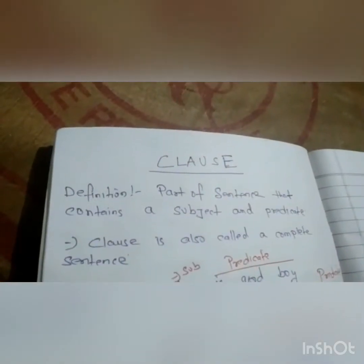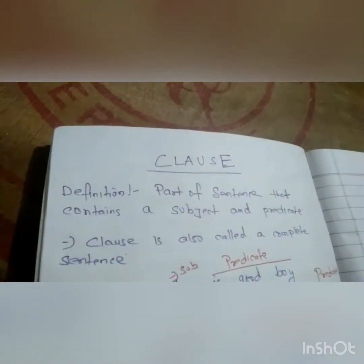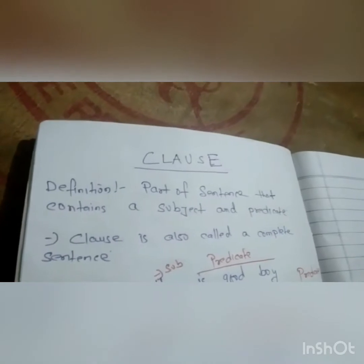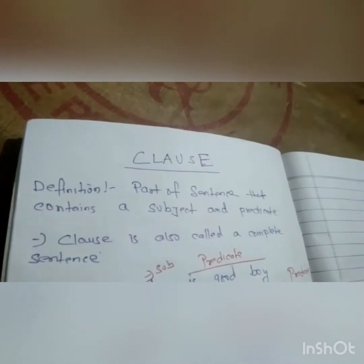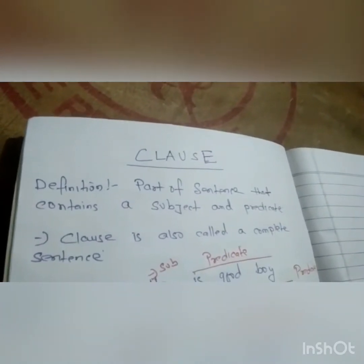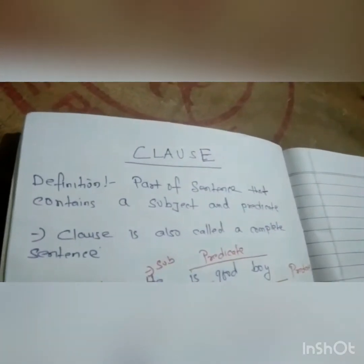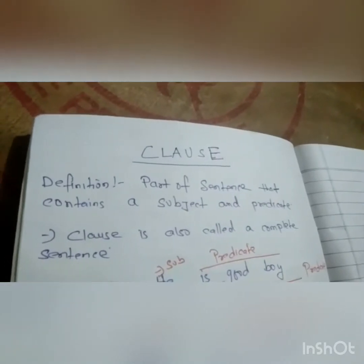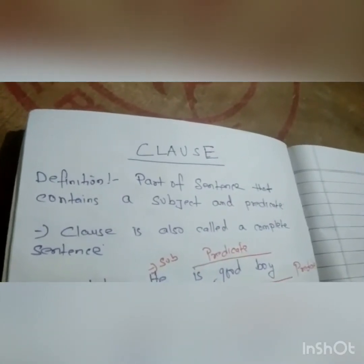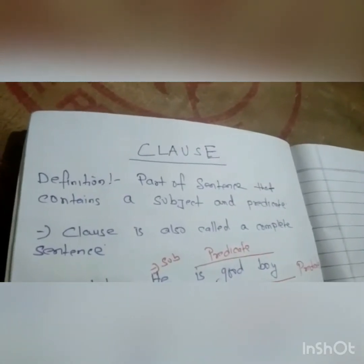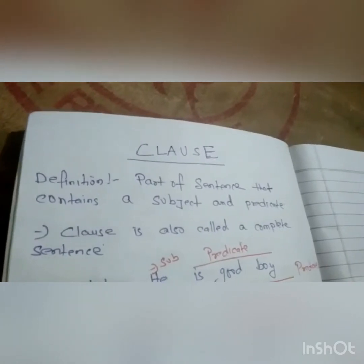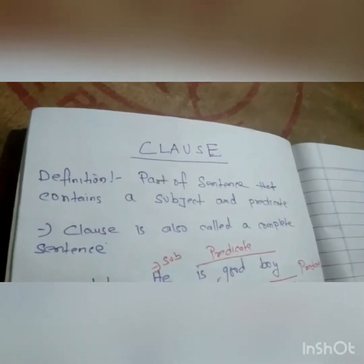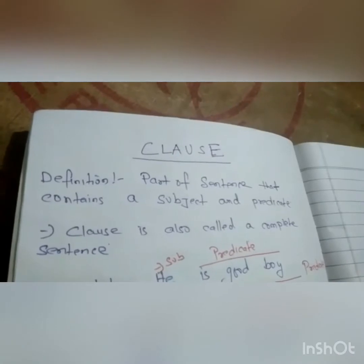Today I am going to discuss a very important topic of English grammar and the name of the topic is Clause. Let us begin with the definition. According to the definition, a clause is a part of a sentence that contains a subject and a predicate.